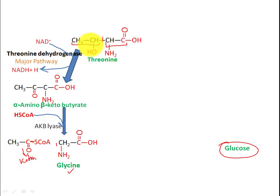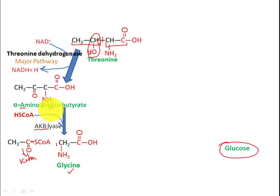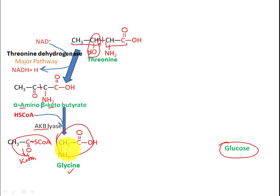In pathway one, the first step is dehydrogenation: one hydrogen is removed and the hydroxyl group converts to a keto group, forming alpha-amino-beta-ketobutyric acid (AKB). Then AKB lyase breaks this compound, generating two products: acetyl-CoA and glycine.